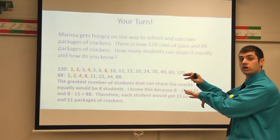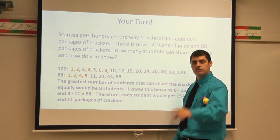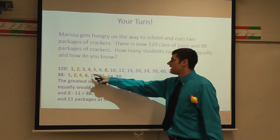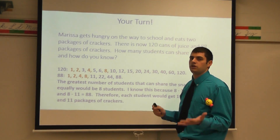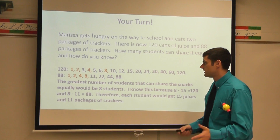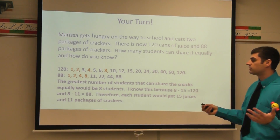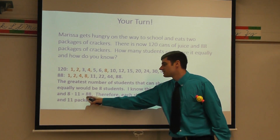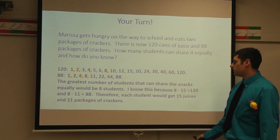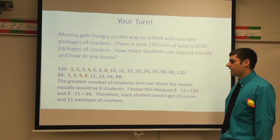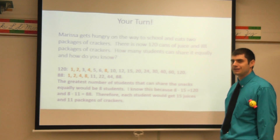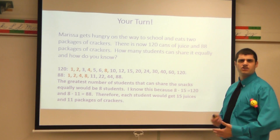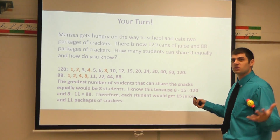So we're going to list the factors of 120 and 88, and highlight or circle all the ones that are in common. The greatest common factor of 120 and 88 is 8 — that's my GCF. The greatest number of students that can share the snacks equally would be 8 students. I know this because 8 times 15 equals 120, and 8 times 11 equals 88. Therefore, each student would get 15 juices and 11 packages of crackers. That's a lot of juice and a lot of crackers, but maybe Marissa is just really generous.